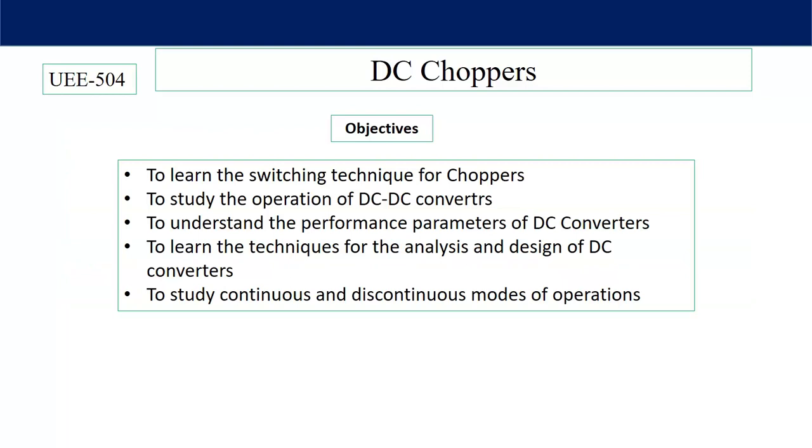The objective of this chapter is to learn the switching technique for different types of DC to DC converters, to study the working principle of DC converters, to understand the performance parameters like average output voltage and RMS output voltage, to learn the techniques for the analysis and design of DC converters—that means to design the inductor, capacitor, and switch selection in a DC to DC converter.